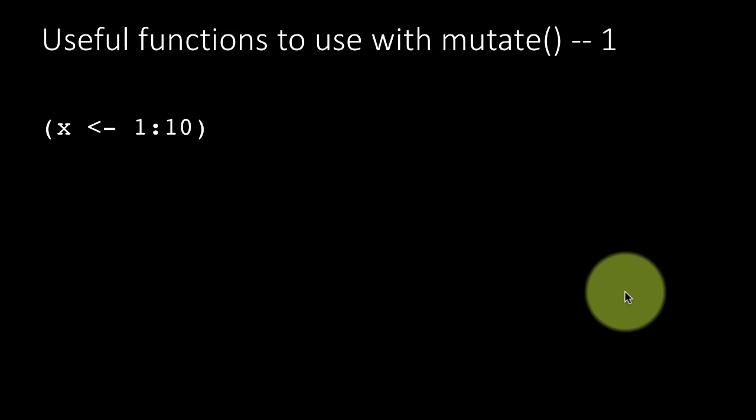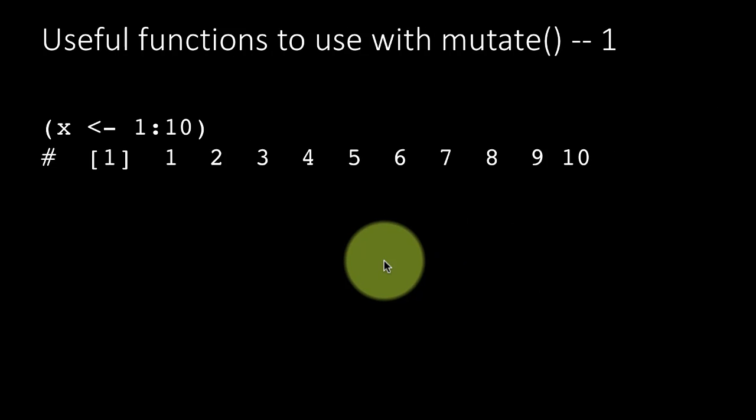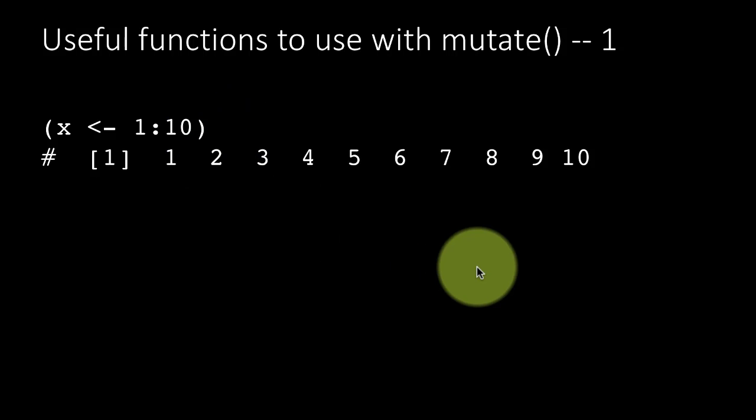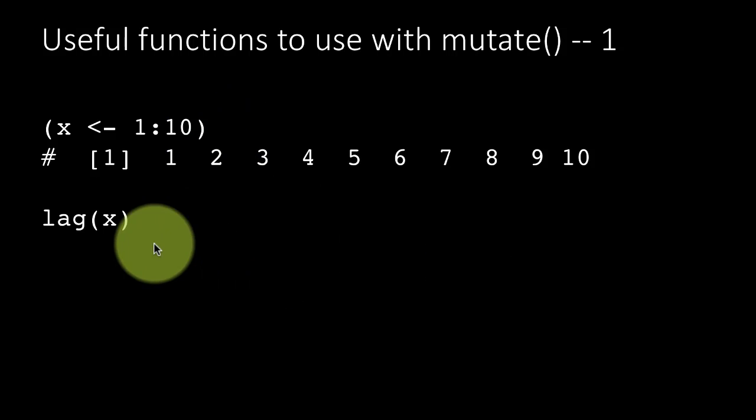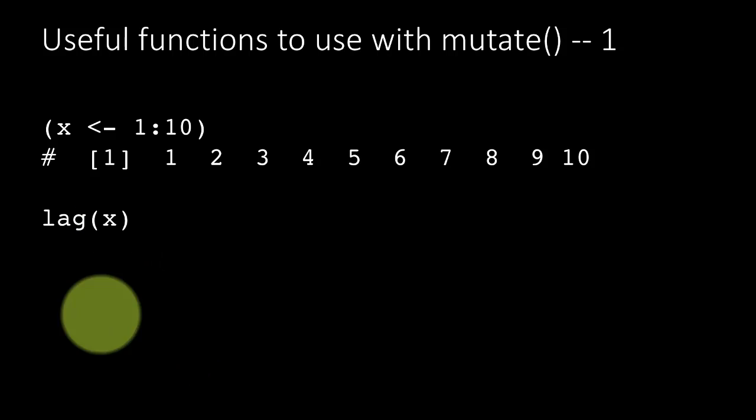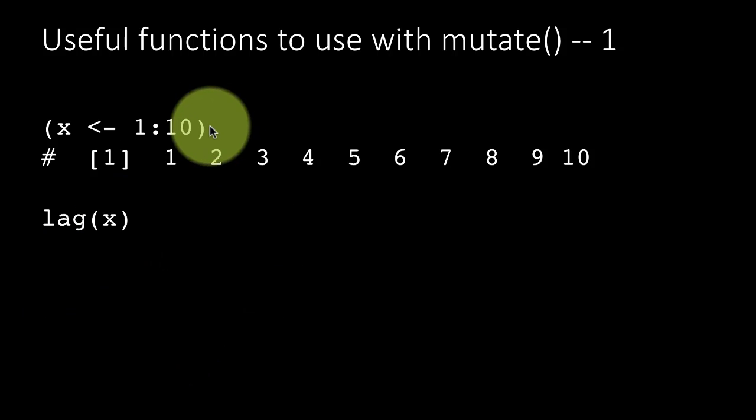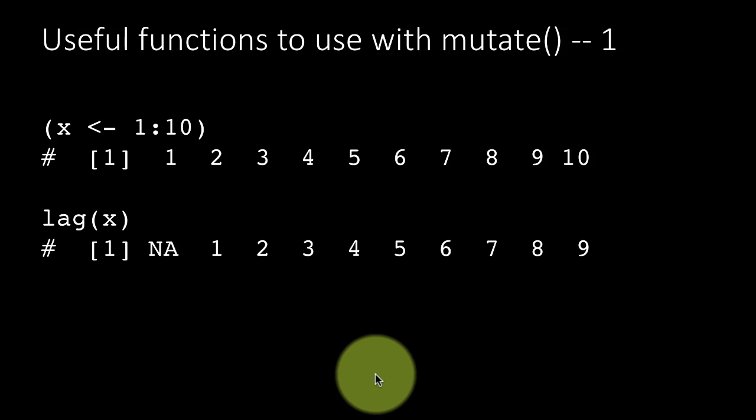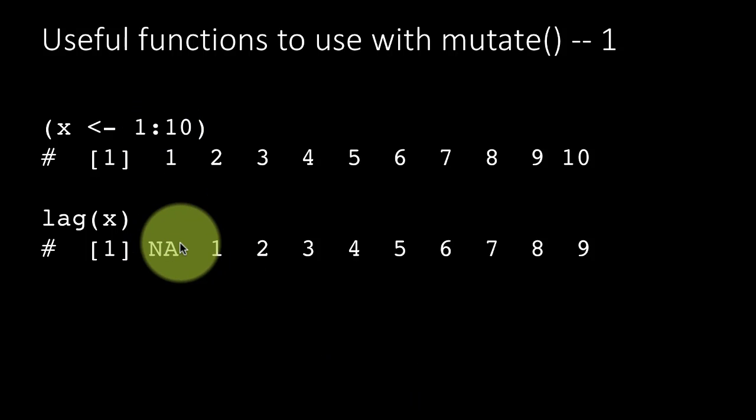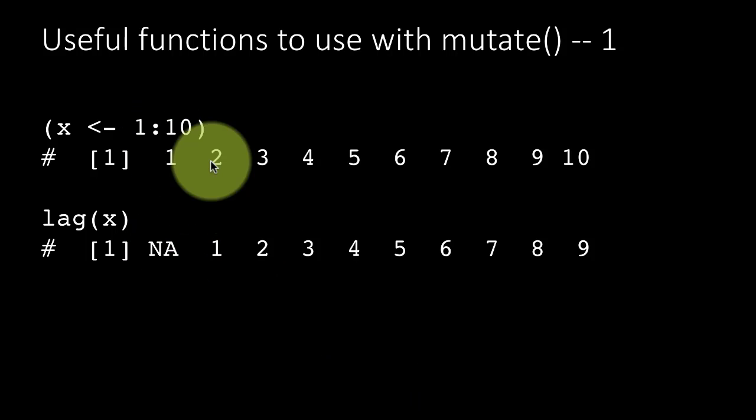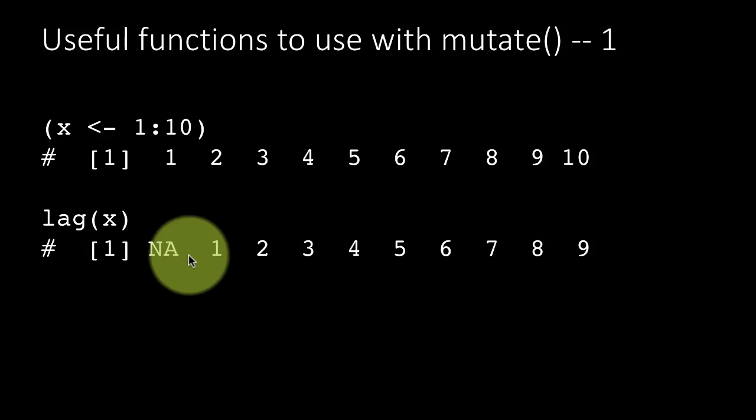Some additional functions. So here I'm just creating a vector with the values 1 to 10, and lag of x. This is something that I discussed in the recitation. Lag of x is nothing but the values of the vector x lagged by 1. So the first value becomes NA, the second value becomes the first, third value becomes the second, fourth value becomes the third, etc.